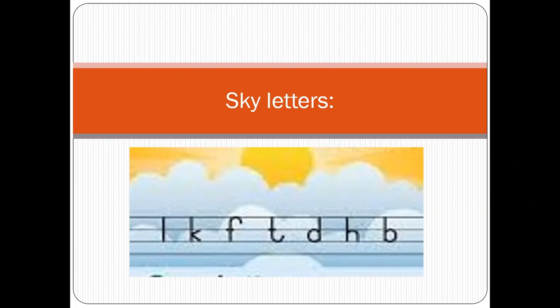Sky letters are those letters that can be written on the top three lines. See there, students — there are four lines: one, two, three, four. And the sky letters will be written on the top three lines: one, two, three. For example: L, K, F, T, D, H, B. All these letters will be written on the top three lines.